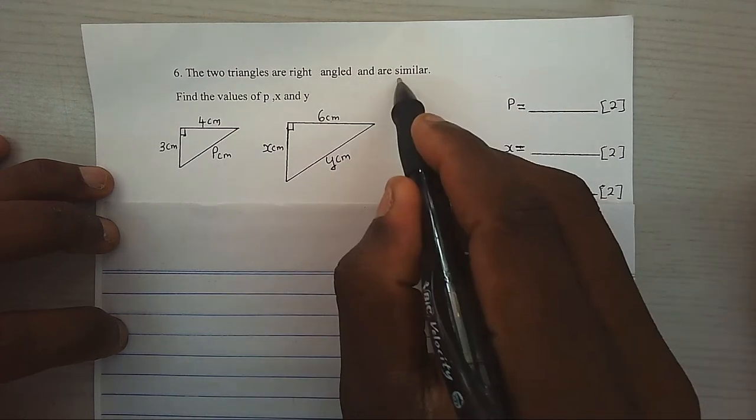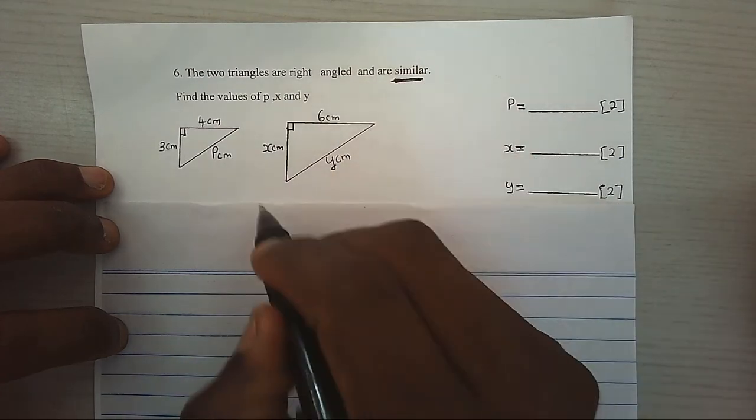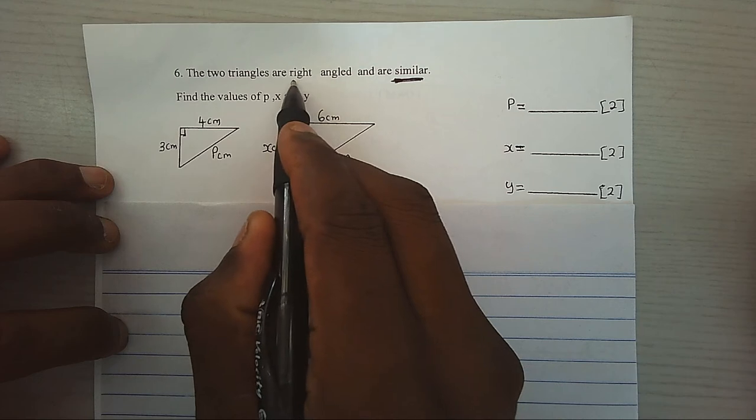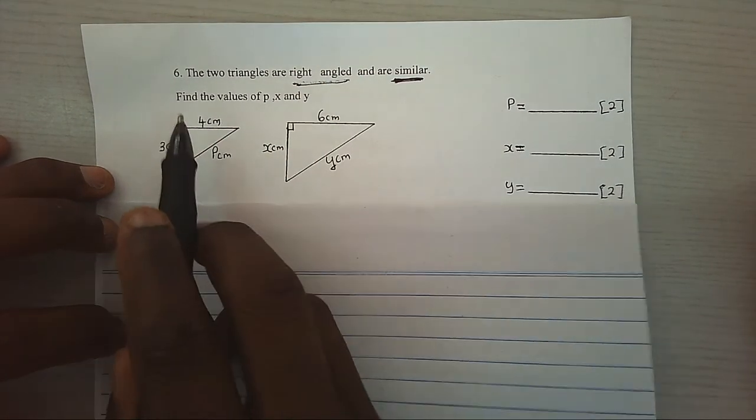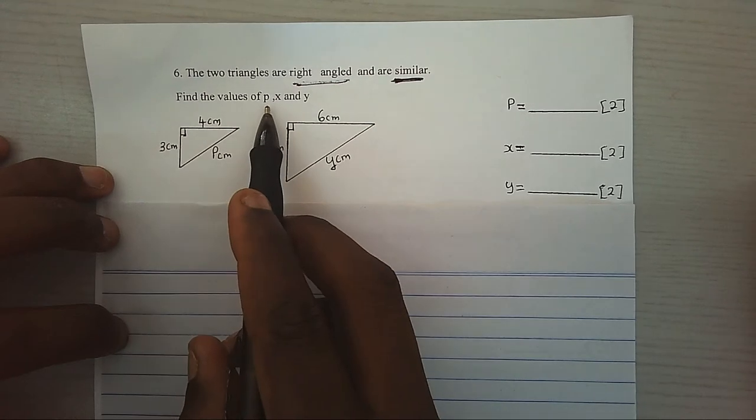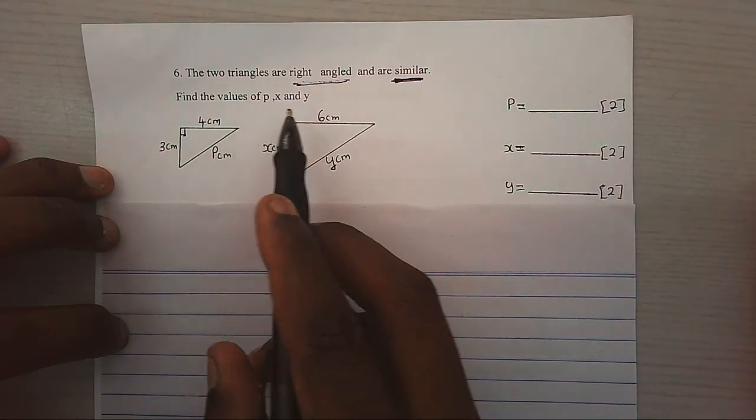So we have to know two things. One, they are similar. Two, they are right angled. Find the values of P, X, and Y.